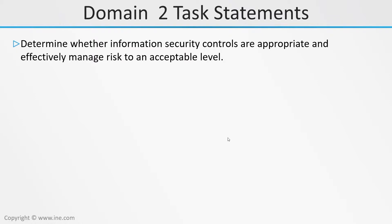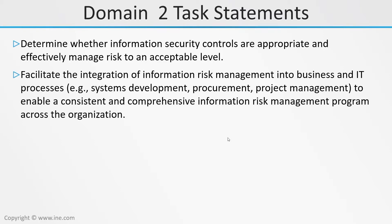We need to determine whether existing security controls are appropriate and effectively manage risk to an acceptable level. The reality is you cannot eliminate a risk — a risk is always present. In other words, a risk is best described as a tolerable uncertainty. We also need to facilitate the integration of information risk management into business practice, ensuring we align our security mechanisms with the goals of the business. If the goal of the business is to make widgets, we need to make sure those risk management practices enable the production of those widgets.